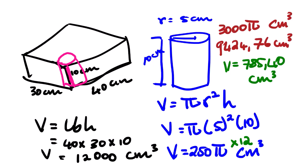Now we can just subtract. So 12,000 minus 3000π should give us one of the options. If we don't get an accurate answer, then we'll use the rounded offer. We get 2,575.22 centimeter cubed.